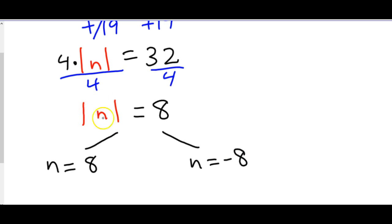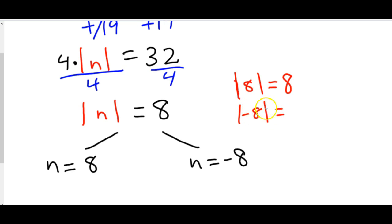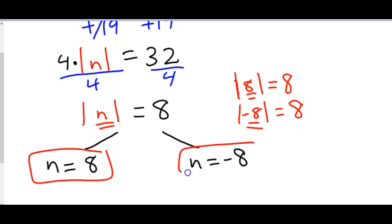The reason we split is because of how absolute value bars work. If we plug in positive 8, the absolute value gives us positive 8. But if we plug in negative 8, the absolute value also gives positive 8. So the value inside could come out as positive 8 — that's our first option — or the inside could be negative 8, that's our second option. That's why we split into two. Sometimes you need more steps to solve for the variable, but in this case splitting it gives us our answer directly.